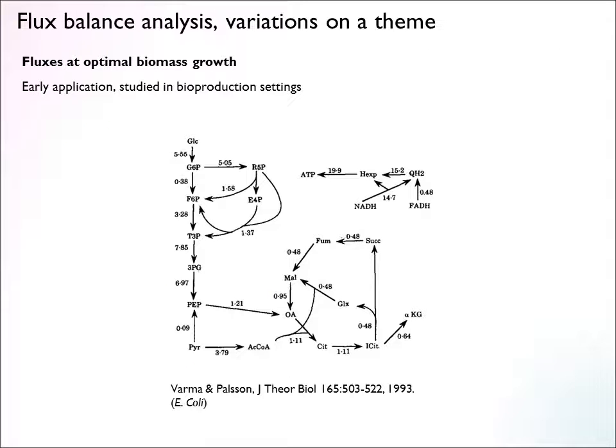One early application was studying fluxes in organisms thought to grow optimally — trying to optimize their biomass growth. This has been studied a lot in bacteria, in bioproduction settings, in chemostats. Under these conditions, flux balance analysis has been fairly successful at identifying fluxes knowing only a few parameters of nutrient uptake and the production of biomass.